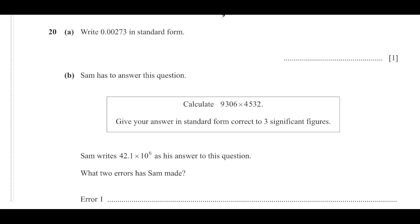Now here our question is write 0.00273 in standard form. So in standard form it will be 2.73. Any standard form, our number will be between 1 and 10, and these decimal values are taken care by 10 power.